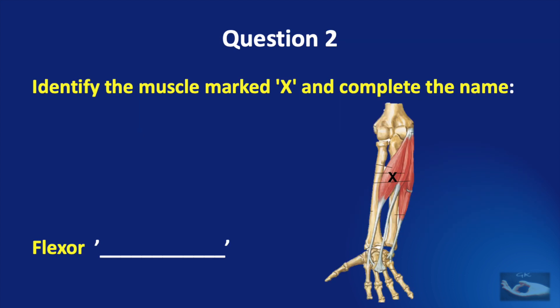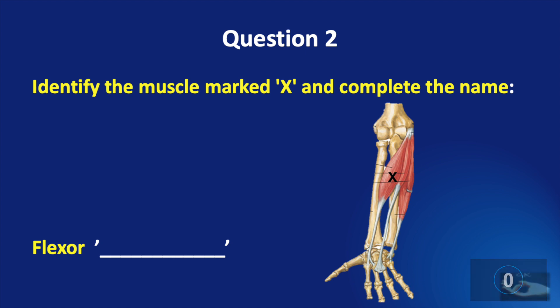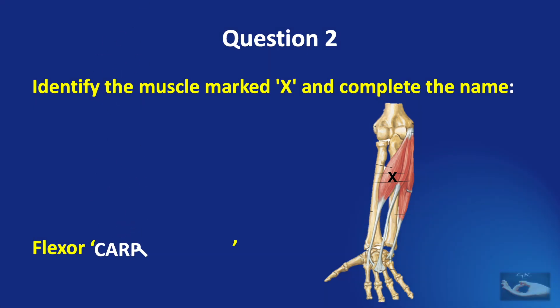Question number two: identify the muscle marked X and complete the name 'flexor dash'. And the answer is flexor carpi radialis.